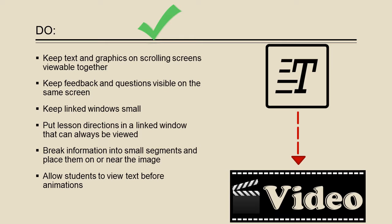Avoid displaying animations and related text at the same time. It's hard for people to do both of these tasks together. Instead, allow them to read the text and then choose when to play the animation using an icon. Remember to make the animation small enough that it does not cover the text so that they can reference it if they need to.